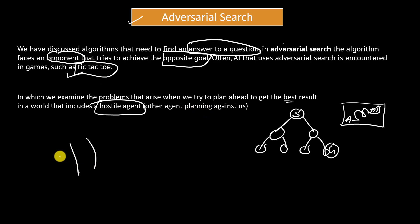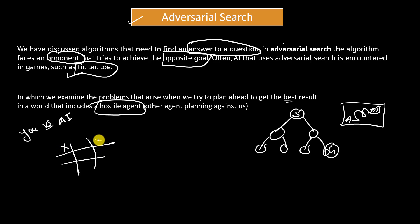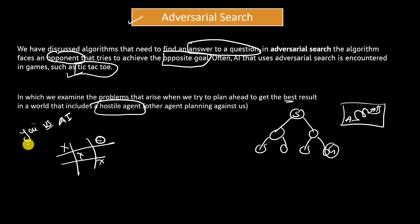In the case of tic-tac-toe, suppose you are playing this game versus an AI agent. AI will play a move, and your next move will depend upon the AI's next move. Similarly, AI's next move will depend upon your next move. Both of you are trying to reach a particular terminal state — we want to achieve XXX or OOO in a particular line. So both are trying to reach a terminal state, but each move depends on the opponent's move. This is what adversarial search is.